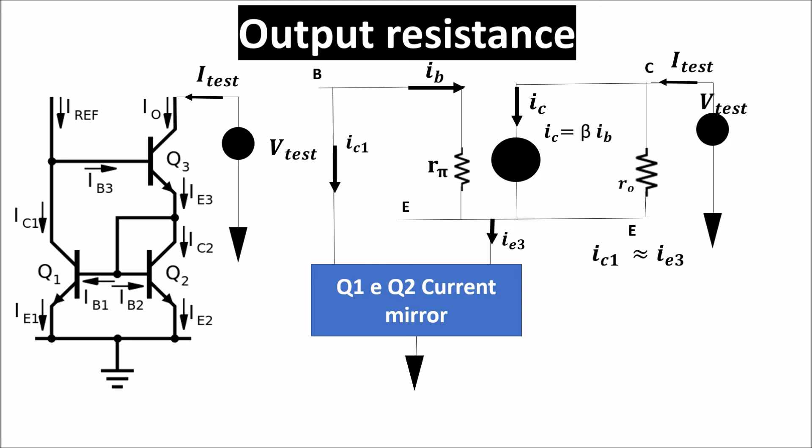So we have that the current ITest enters in this node and goes out from this other node and ITest is equal to the sum of IE3 and IC1, so it is equal to 2 times IC1, or we can say that IC1 is ITest half.